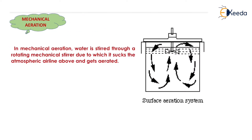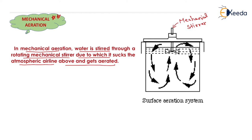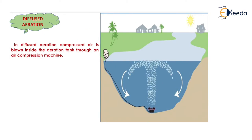The next method is mechanical aeration. In mechanical aeration, water is stirred through a rotating mechanical stirrer. When we rotate the water with the mechanical stirrer, due to negative pressure it sucks the atmospheric air from above and gets aerated, absorbing all the oxygen from the atmosphere. That is known as mechanical aeration.